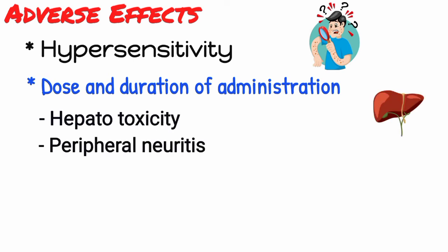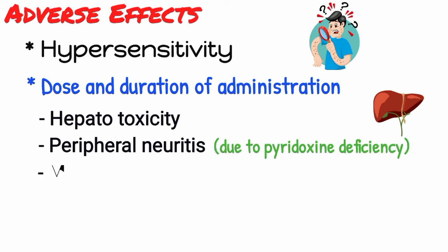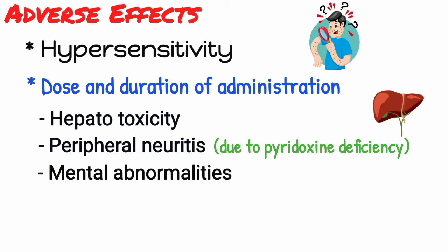Peripheral neuritis is the most common adverse effect, and appears to be due to a relative pyridoxin deficiency. Other adverse effects include mental abnormalities, and convulsions in patients prone to seizures, and optic neuritis.